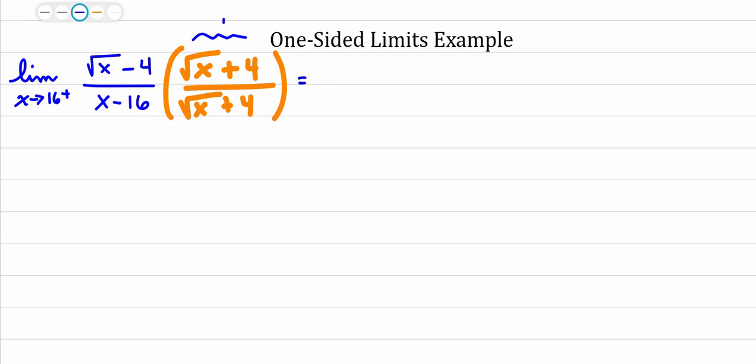So if I multiply this out, I multiply the square root of x times the square root of x, which is x. I multiply the square root of x times positive 4, which is 4 square roots of x. I multiply negative 4 times square root of x, which is negative 4 square root of x. And then negative 4 times 4, which is negative 16. So ultimately what I was doing here was just foiling this top.